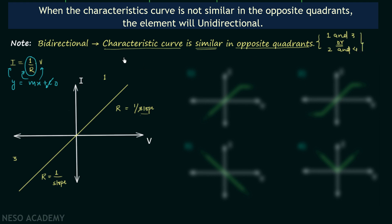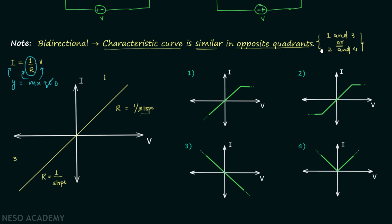Now we will solve a few examples. In the first example, the VI characteristics curve appears in the first quadrant and in the third quadrant, but the curve is not similar in both quadrants. Therefore, this is the curve of a unidirectional element. The second example is homework for you.